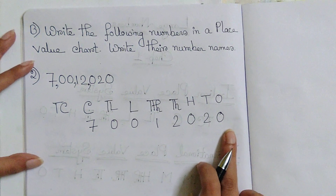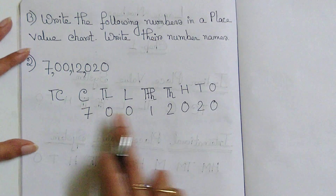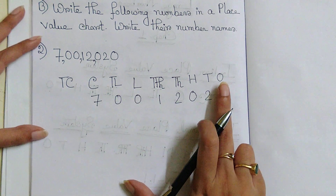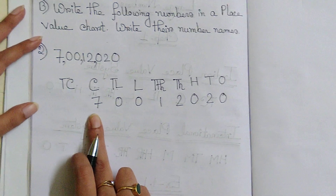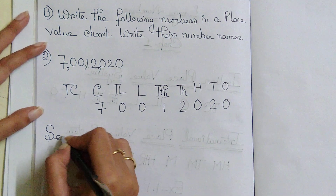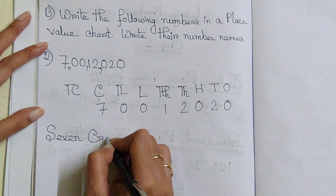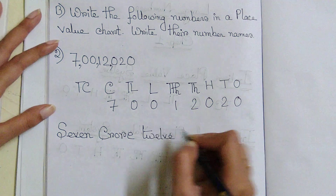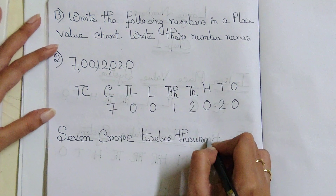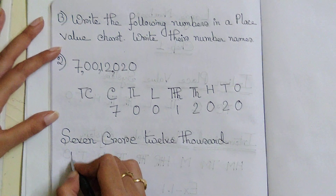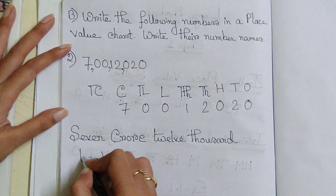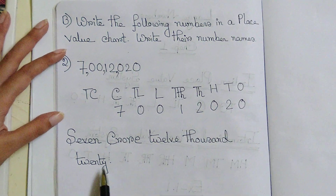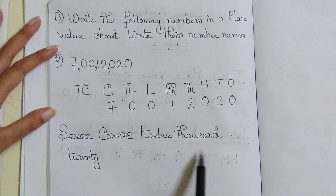Now I need to write down the number name. Since 7 is placed under crore, 1 is placed under 10,000, 2 under 1000, 2 under tens, and 0 under ones. The number name is 7 crore 12,020. Since nothing is under the lakhs place, we are not going to write anything there.